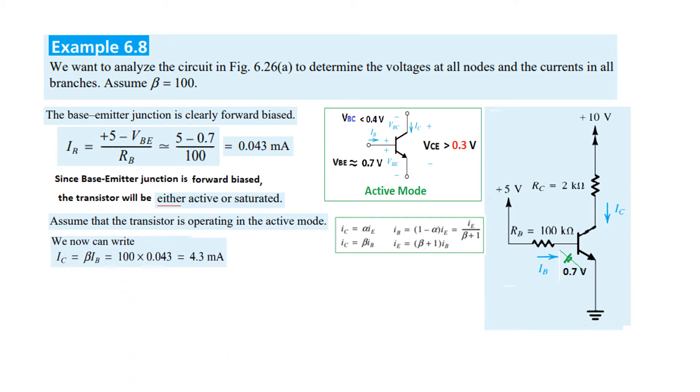Since we've assumed active mode, let's find the other parameters. IC will be β times IB. We have found IB, therefore IC = 100 × 0.043mA = 4.3 milliamperes. This is the second parameter we've found by assuming the transistor is in active mode.